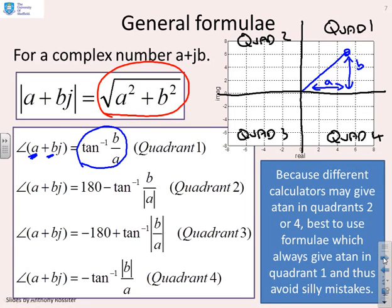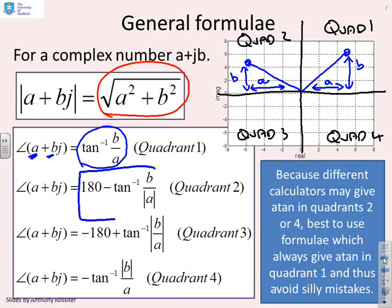In quadrant 2, the vertical distance is b but a is negative. If you do tan⁻¹(b over a) you get tan⁻¹ of a negative number. To avoid mistakes, use the formula: 180 minus tan⁻¹(b over |a|). By using the modulus of a, you ensure only positive numbers go into the inverse tan, and you use geometric insight to get the correct answer.